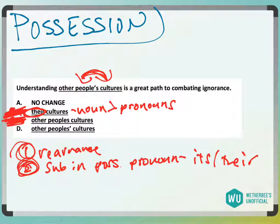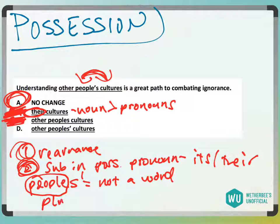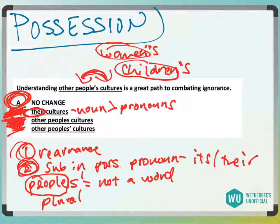What makes this tricky is that "people" is technically already plural — it means many people. Because "people" is already plural, we aren't going to say "peoples'" with just an apostrophe — that's not a word. It's going to be "people's" with an apostrophe S, because "people" itself is already plural, so we just add apostrophe S on the end. Other words like this include "men's," "women's," and "children's" — these are already plural, so we just add apostrophe S. So the answer is choice A.